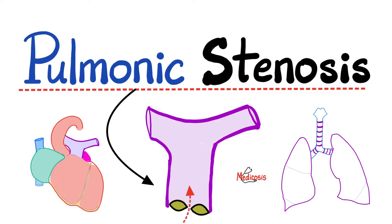The pulmonic valve is located between the right ventricle and the pulmonary trunk. Stenosis means a narrow valve, which is going to impede the flow of deoxygenated blood from the right ventricle into the pulmonary trunk. What are the causes of pulmonic stenosis? What are the symptoms? How can we diagnose it? And how can we treat it? Let's find out.